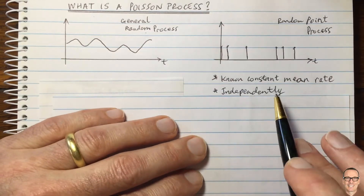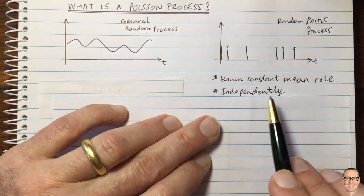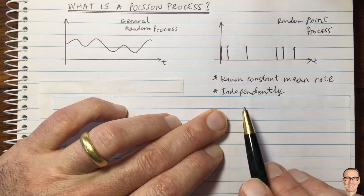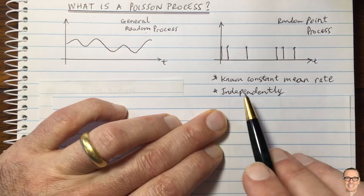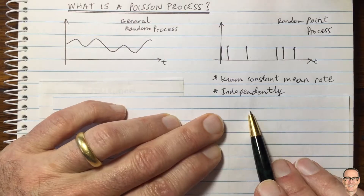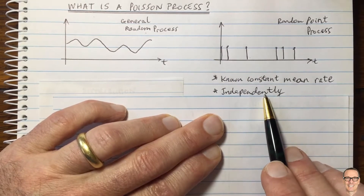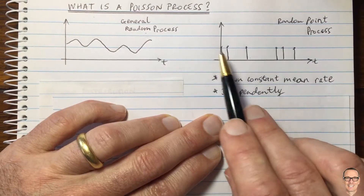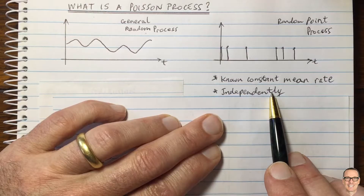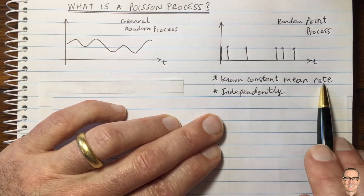Also, the events happen independently — that's an assumption of a Poisson process. This means that events don't happen in relation to other events. So if they're people arriving at a bus stop, we're not including situations where groups of people arrive or people come with their friends. It would only apply as a Poisson process if the people all arrive independently of each other and randomly with this constant rate.